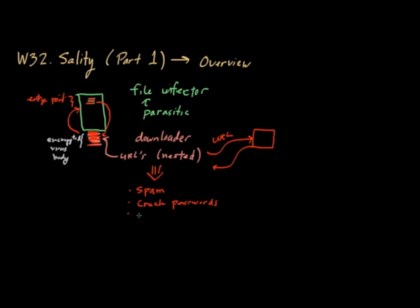You can also use Sality for proxying communications, so it acts as a malicious proxy. What that'll do is it'll hide the source of an attack. So if I'm trying to mount an attack on somebody else, I can mount that attack through a malicious proxy.